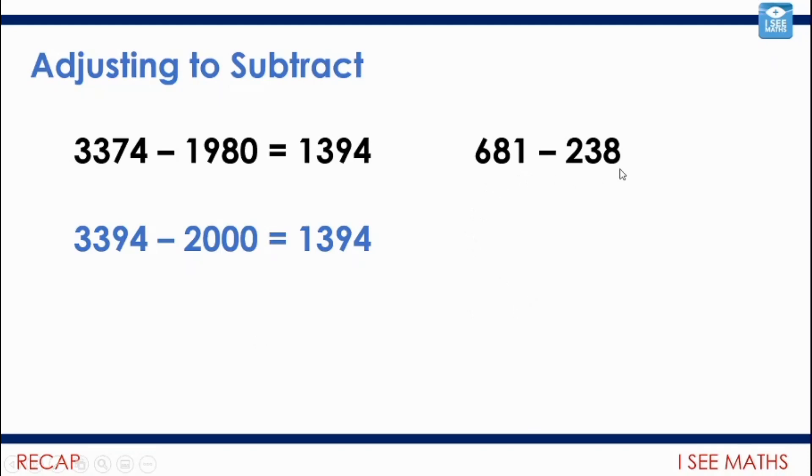For 681 subtract 238, one of the little challenges I'll have here is I'll go 1 subtract 8, well I can't do that, so I have to regroup there. Actually if I just do instead 679 subtract 236, then I can just do 9 subtract 6, 7 subtract 3 in the tens, and 6 subtract 2 in the hundreds, and what will that give me? 443. This principle of always looking at calculations and thinking how can I just play with these numbers beforehand I think is enormously powerful.